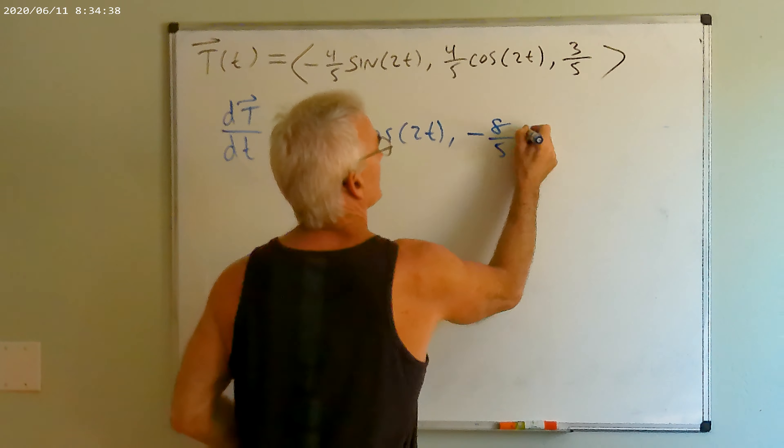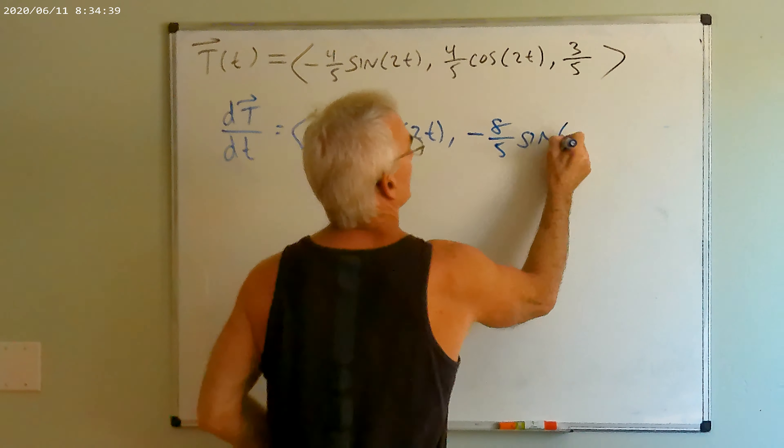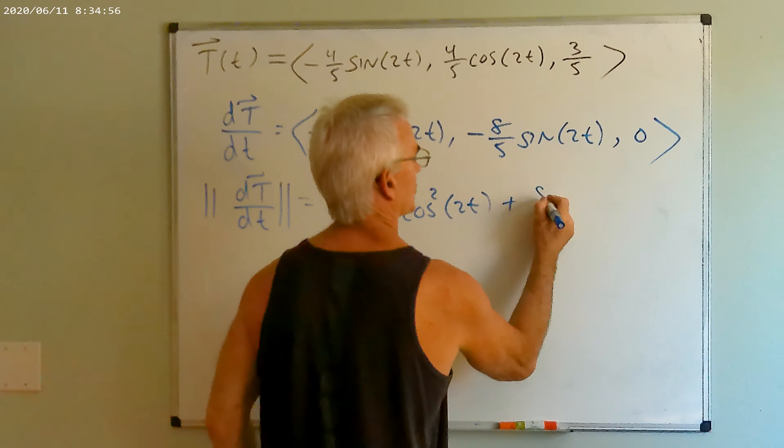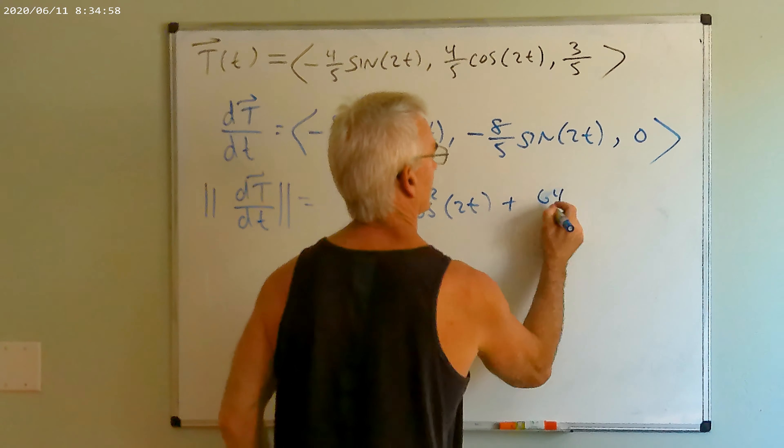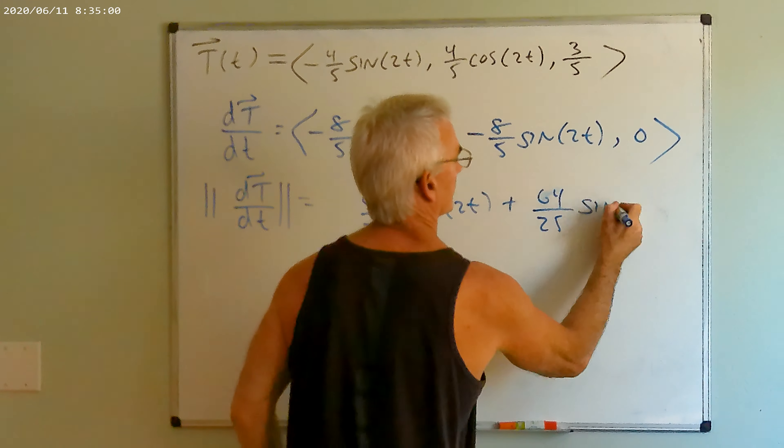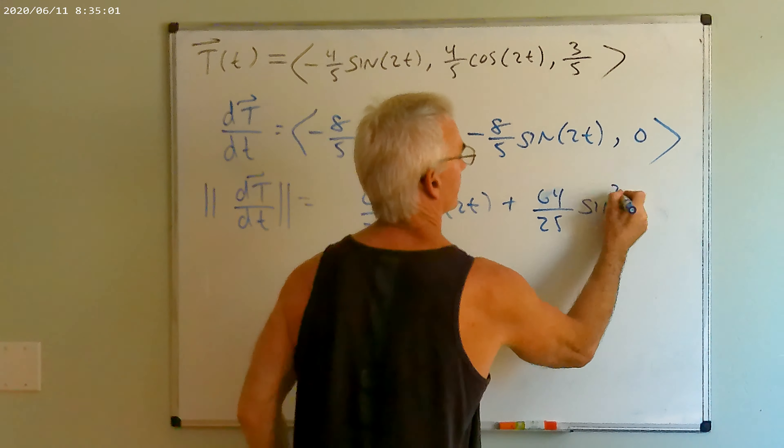That's a scary-looking quantity, but these are the basic definitions: the unit tangent points in the direction of the velocity, and the unit normal points in the direction of the derivative of the tangent vector. Now we're going to do a few examples to walk through the process. Let's consider the following helix — we'd like to establish the unit tangent and unit normal vectors in general, and we can always evaluate them at specific values of t afterwards.